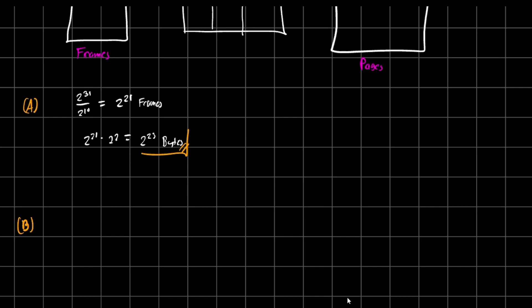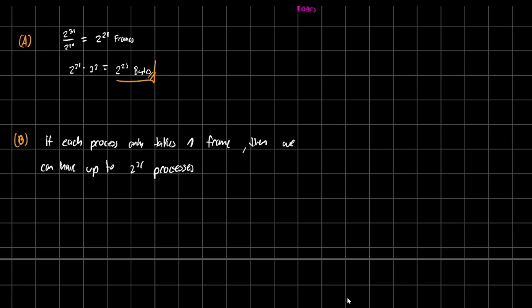For like each frame can be taken by one process. So if each process only takes one frame, then we can have up to 2 to the 21 processes. And that pretty much is a gist of the idea. If each process takes one, only one frame, then we can have up to 2 to the 21 processes. And so we have solved the inverted page table exercise.